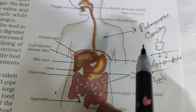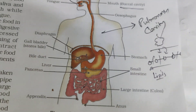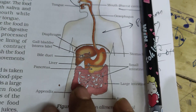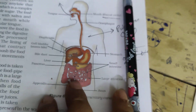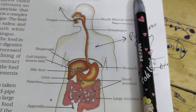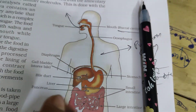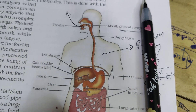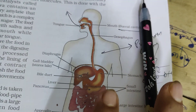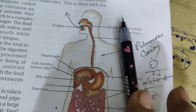The liver secretes bile juice. Do you know that bile salt — many think that NaHCO3 is the bile salt, but no. Bile salt is actually sodium glycocolate (G-Y-L-Y-C-O-C-H-O-L-A-T-E) and sodium taurocholate. These two names you must remember.